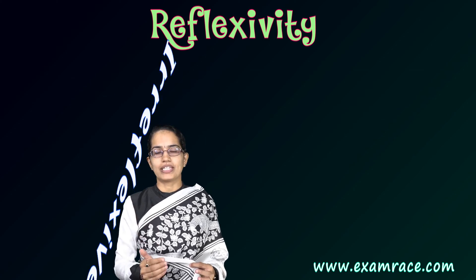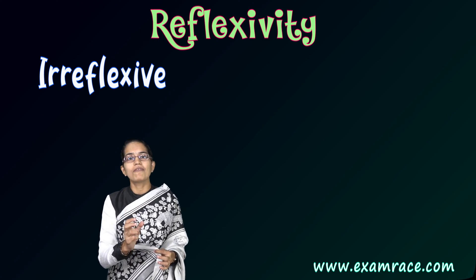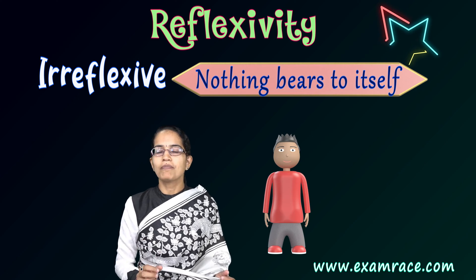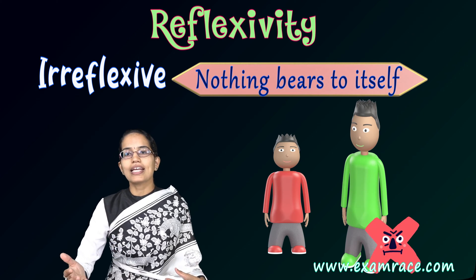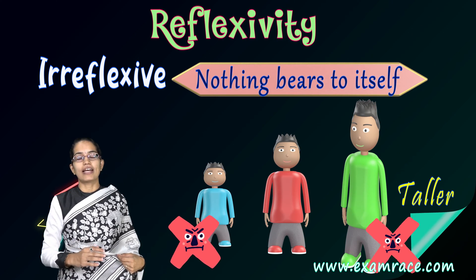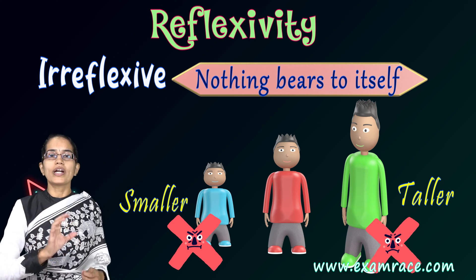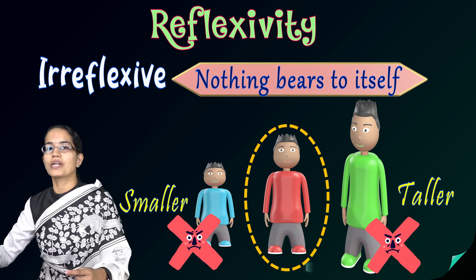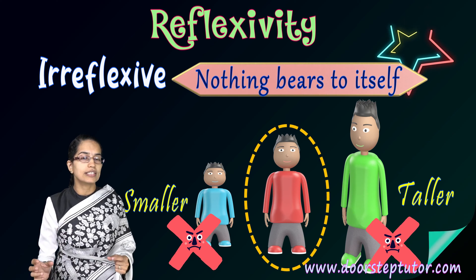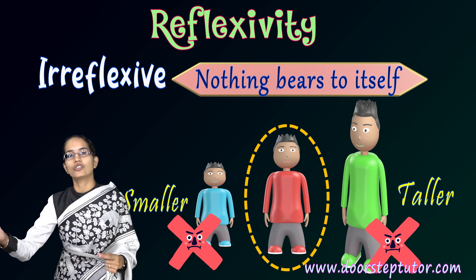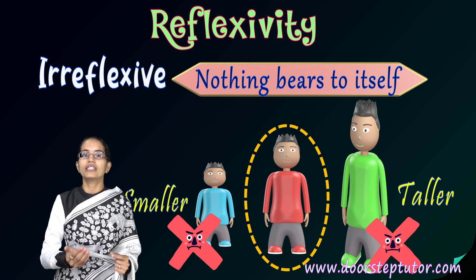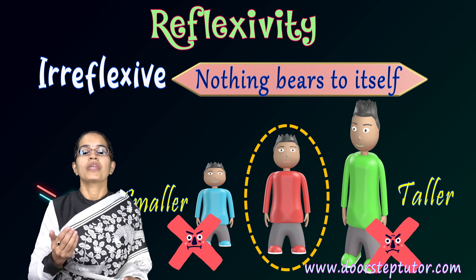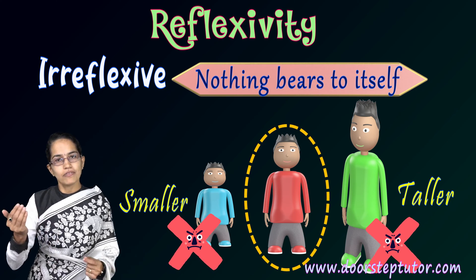The next is irreflexive. Irreflexive means nothing bears to itself. What does that mean? Nothing can be taller than itself, nothing can be smaller than itself. So what I am trying to put out here are examples to help you understand that nothing bears to itself is an irreflexive relation that we are talking about.